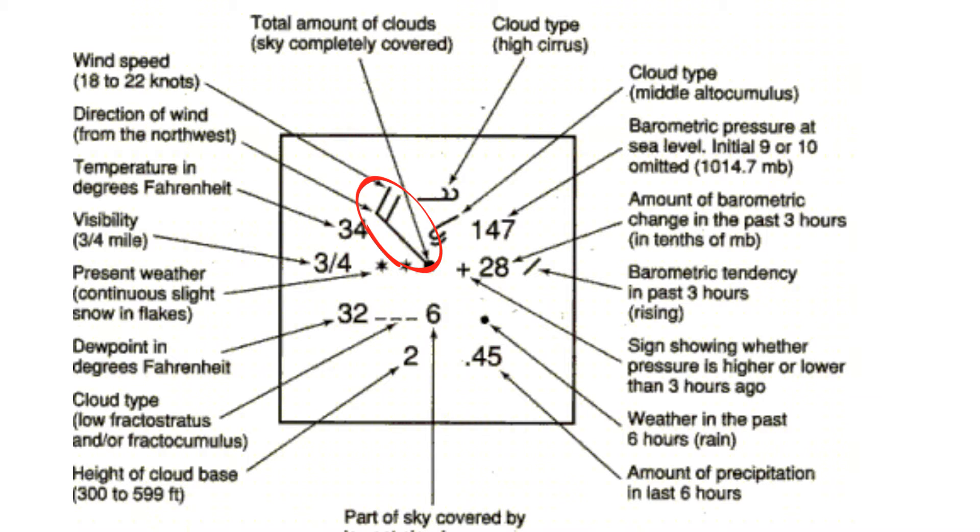You have the wind speed in knots. It also gives you the direction. A small line equals 5 knots, a larger one equals 10, and a triangle is 50 knots.